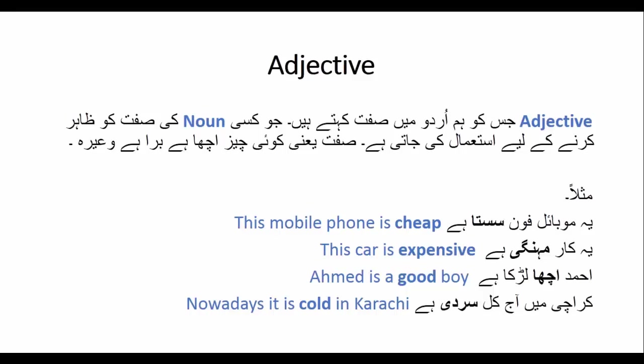This mobile phone is cheap — اس جملے میں cheap جو کہ سستہ کے معنی میں ہے، یہ mobile phone کے بارے میں بتا رہا ہے کہ یہ کیسا mobile ہے۔ اگر یہ مہنگا ہوتا تو کہتے: this mobile is expensive۔ خوبی کے لیے: this mobile is good، خامی کے لیے: this mobile is bad۔ Adjective noun کو مزید describe اور واضح کرتا ہے۔